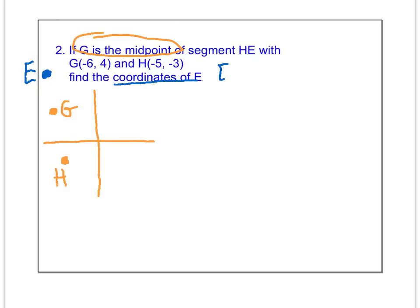I'm going to say that the coordinates of E right now, we don't know what they are, so I'm just going to call them X and Y. We do know the coordinates of H, so we're going to use E and H in the midpoint formula to help us figure out G, which we actually know the answer to.